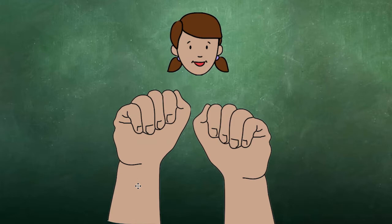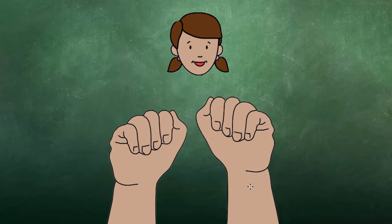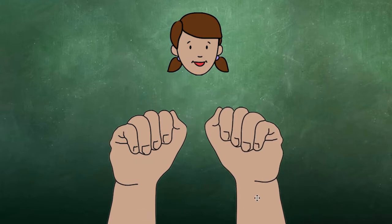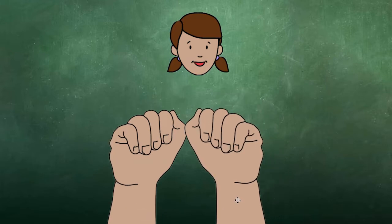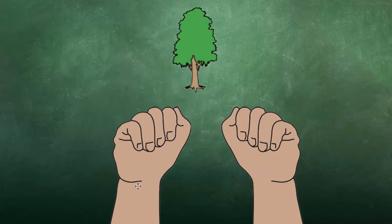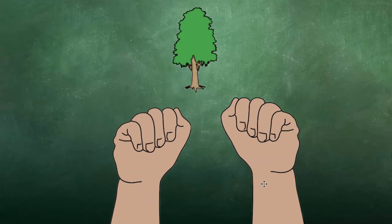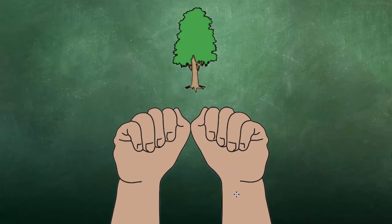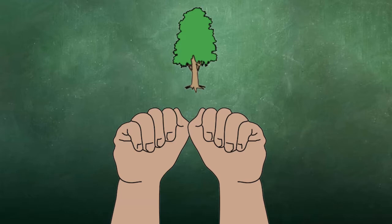Say /g/... /irl/, put them together — girl. Say /tr/... /ee/, put them together — tree.